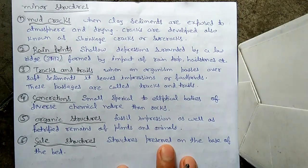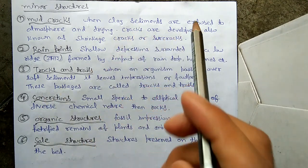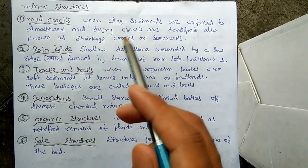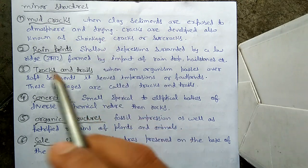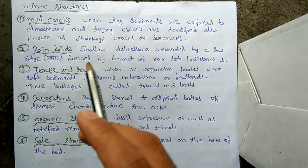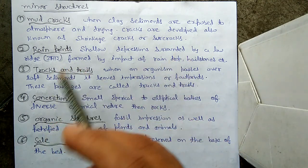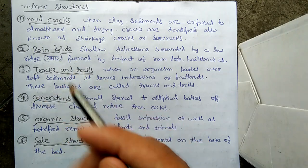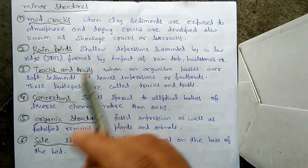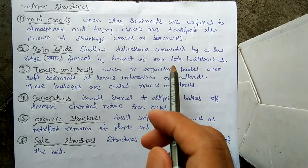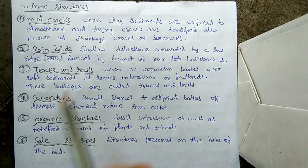There are six minor structures. The first is mud cracks: when clay or fine-grained sediments are exposed to atmosphere and dried, cracks are developed — also known as shrinkage cracks or sun cracks. Similar to drought conditions where land cracks when dried. The second is rain prints: circular depressions surrounded by a low ridge, formed by the impact of raindrops or hailstones.